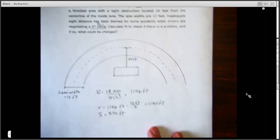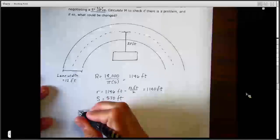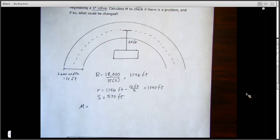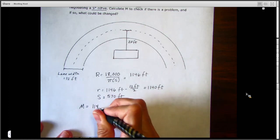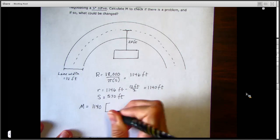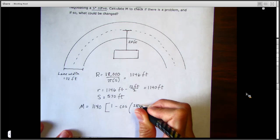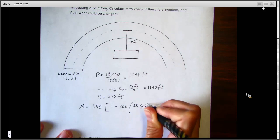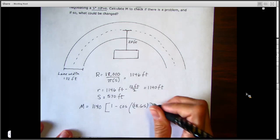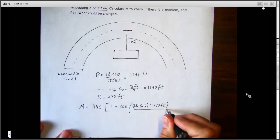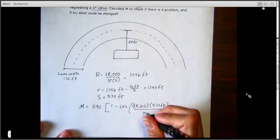So 570 feet for our S, and then let's plug it all in to solve for M. We're going to follow our formula. We're going to take that little r, 1140 feet, and multiply that by the quantity of 1 minus the cosine of 28.65 times that stopping distance, 570 feet, all divided by that little r of 1140 feet.